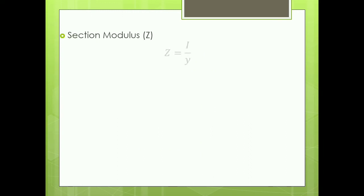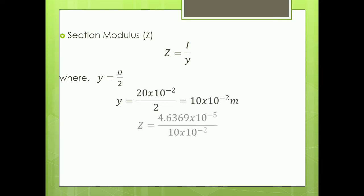Next we have section modulus. Section modulus you already know the formula as I/y, and the value of y for a circular section will be D/2. So you will get Z = 4.6369 × 10⁻⁴ meter cube.